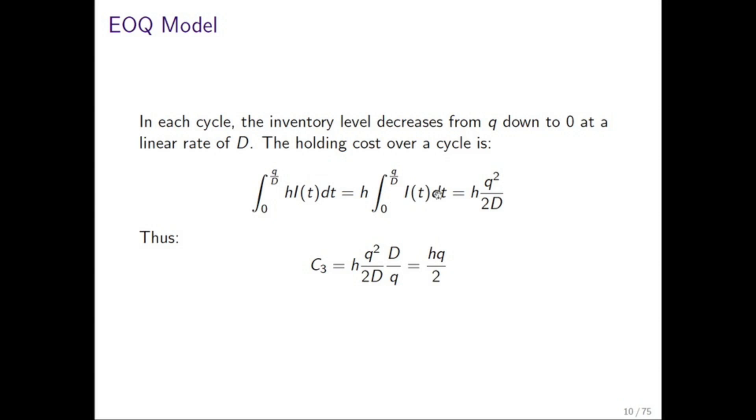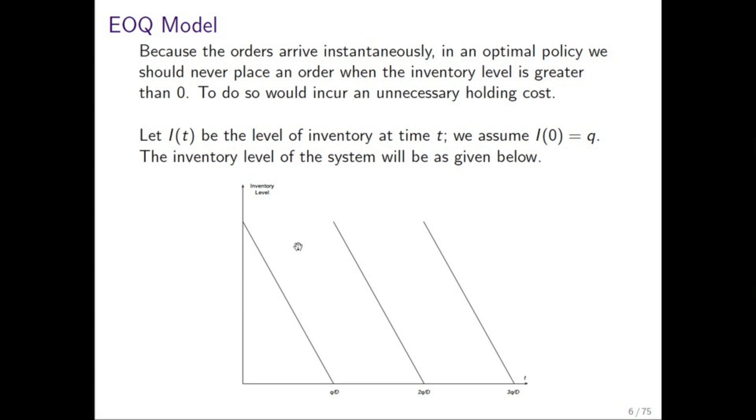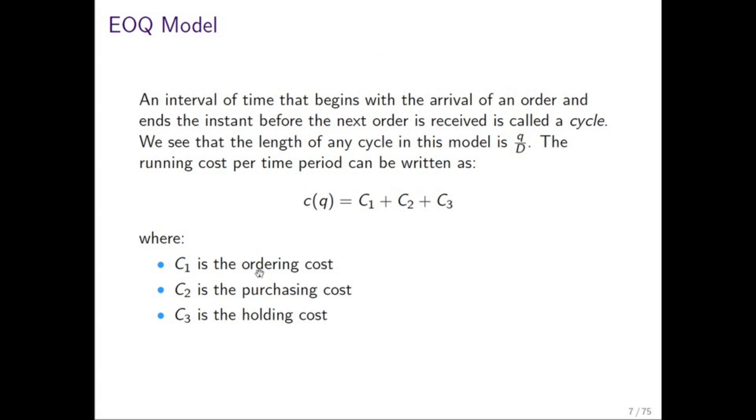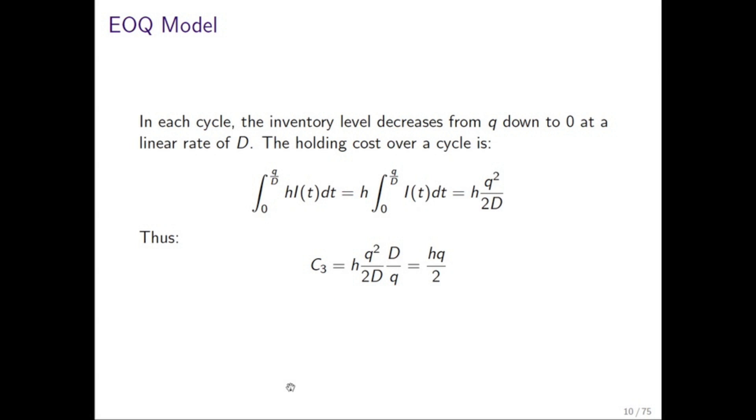We integrate the total number of stock we have at that time point multiplied by the holding cost. And we can actually get an expression for I of t very easily. But if I just go back a few slides, what we're doing is integrating under this curve, and that is basically taking the area under this curve. And we know that the height of this triangle is Q, and the width of the triangle is Q over D. So we got the area of a triangle, Q squared over 2D multiplied by h. But remember, that's the holding cost over the total cycle. We want the holding cost per time period, so we have to divide that by Q over D, or multiply by D over Q.